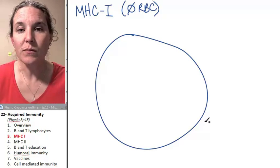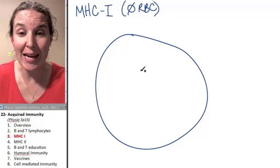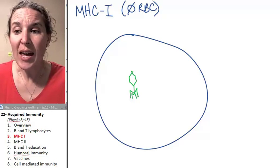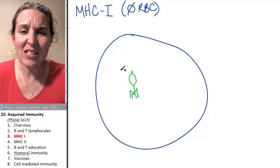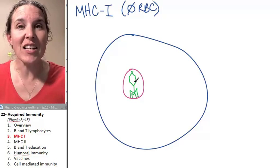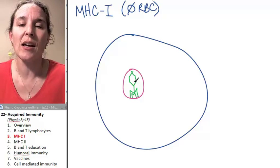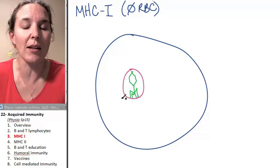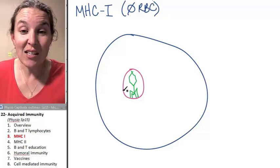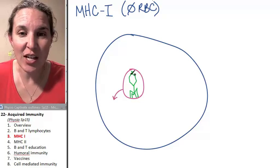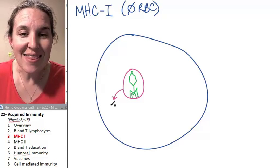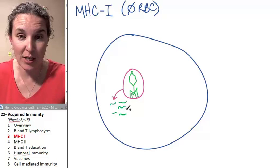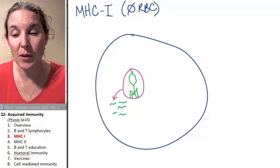So MHC-1 — let's say we ingested some little virus. It's inside our body. We go ahead and throw that virus into a vesicle. We find it and we're like, let's digest this thing. So this little vesicle of virus is digested, broken up into little pieces of virus. Then the little pieces of virus, after being broken up by the digesting vesicle, are sent to the endoplasmic reticulum.